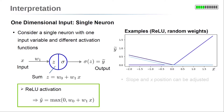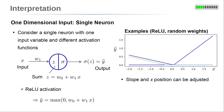Now let's replace the sigmoid activation by the ReLU activation function. The sum v equals w0 plus w1 times x is used as input for the ReLU activation. This gives the neuron's output y tilde equals the max value of 0 and w0 plus w1 times x. Similar to the sigmoid, parameters w0 and w1 adjust the position on the x-axis and the slope. If the slope is negative, the linear part of the ReLU function is on the left side. Note that the ReLU function output is always positive, independent of the parameters and values of x.